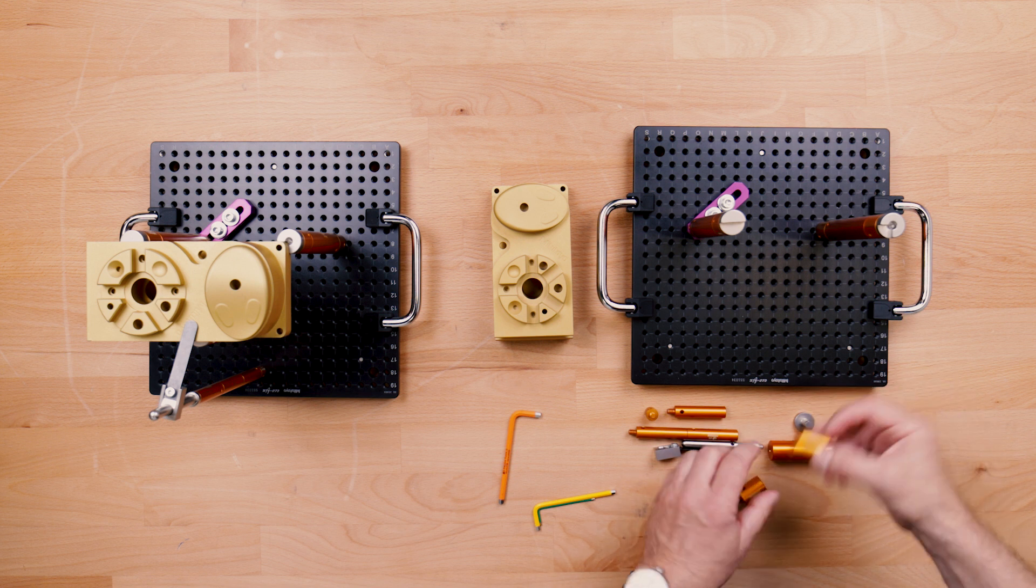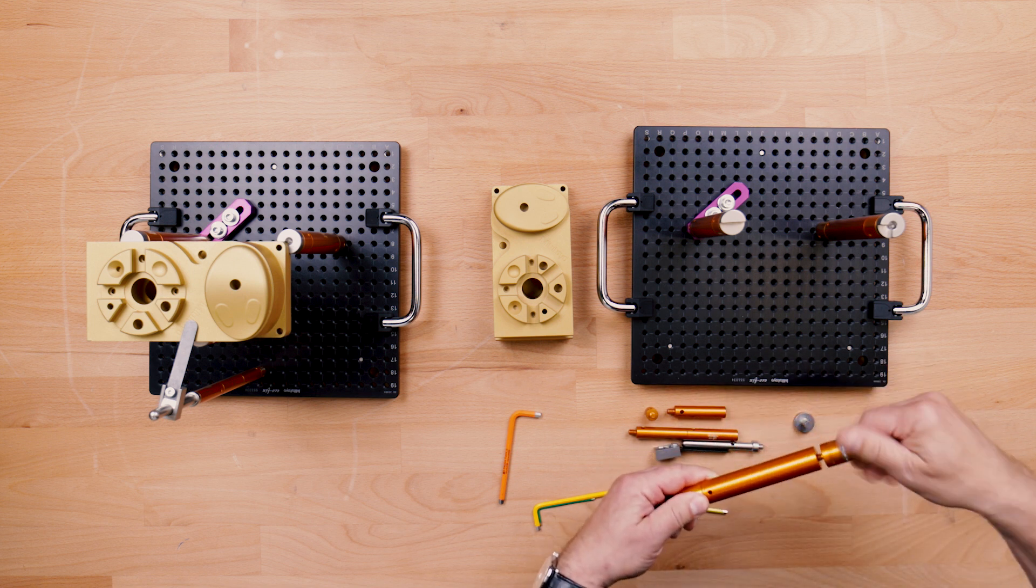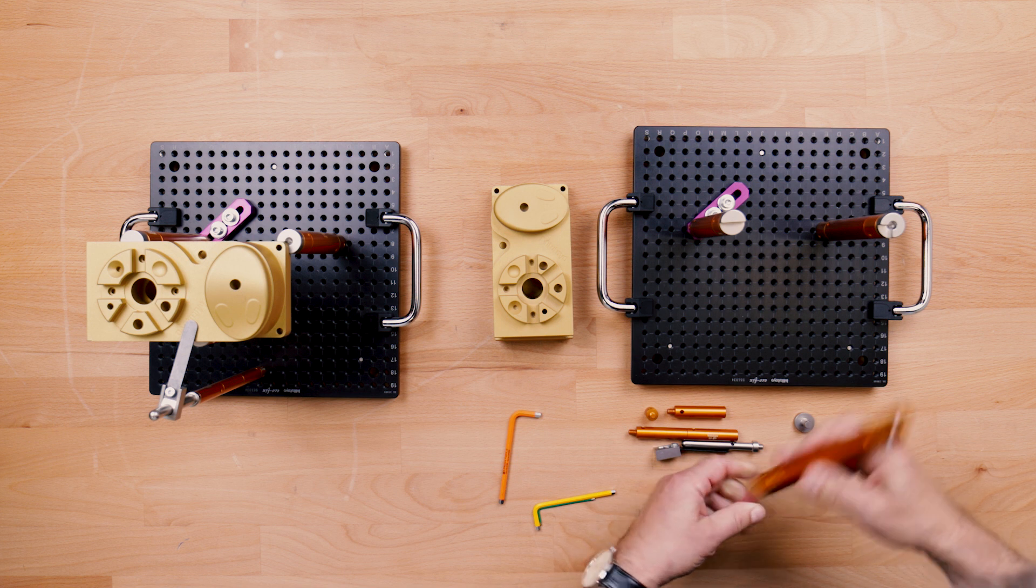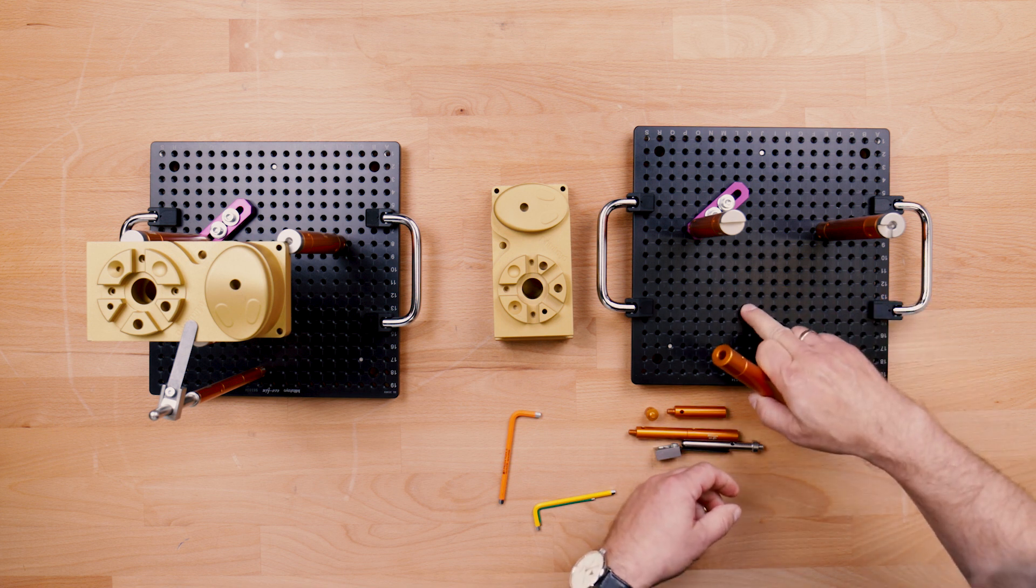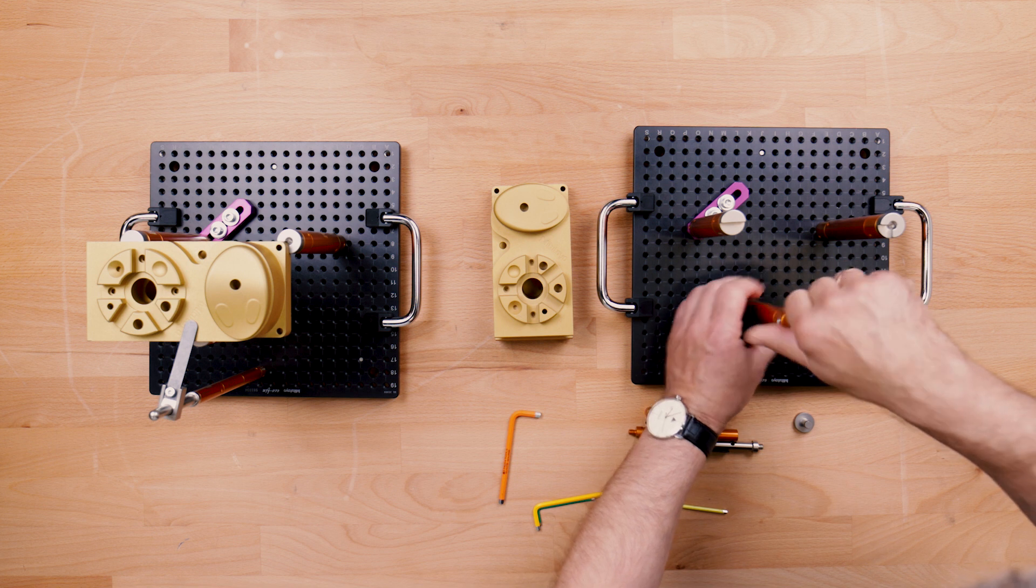Now we are building the third column for the three point setup of the part. This one goes to K14. We can already insert the flat top contact point and fix it.